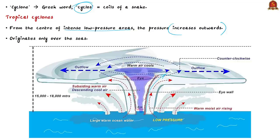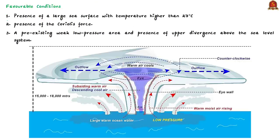Basically there are two types of cyclones: tropical cyclones and extra-tropical or temperate cyclones. Tropical cyclones mostly occur between 5 degrees to 20 degrees north and south latitudes. Today's discussion will be centered around tropical cyclones, as cyclones that occur in the Bay of Bengal are tropical cyclones. One important point about tropical cyclones is that they originate only over the seas — they originate and intensify over warm tropical oceans.